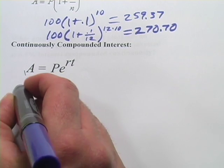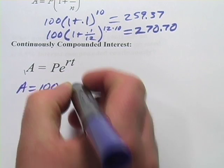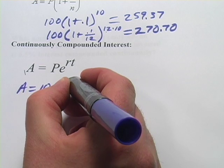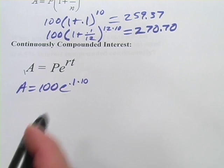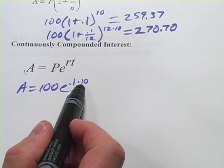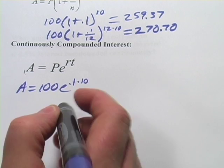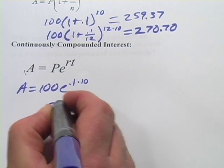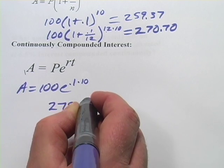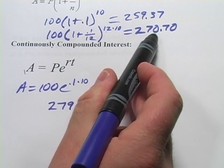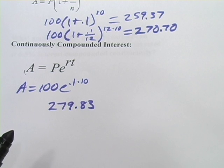So if we were going to do that here, we'd have $100 principal times E to the .1 times 10, or E to the 1 there. And that, in this case, would give us $279.83. So a little bit more than we got from compounding monthly. So that's some of the formulas for compounding interest. Let's look at the problems now.